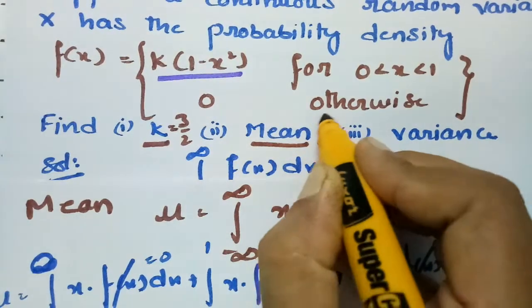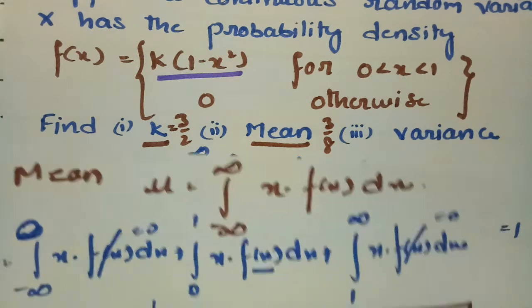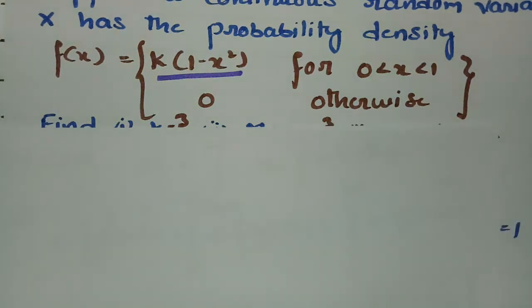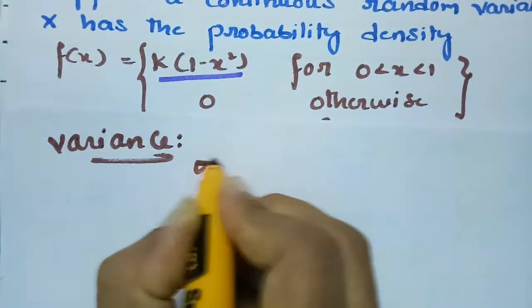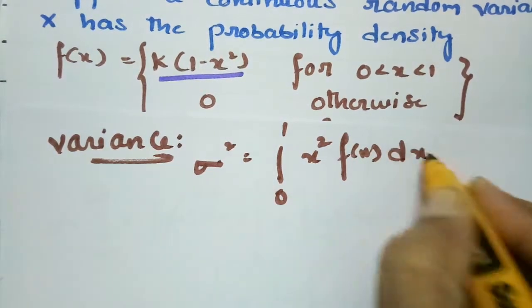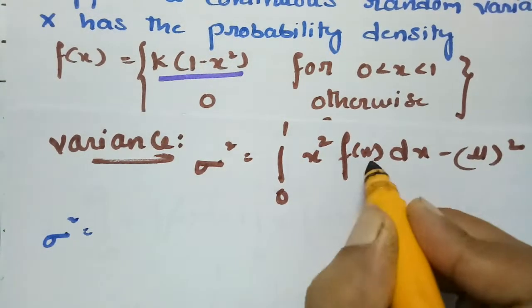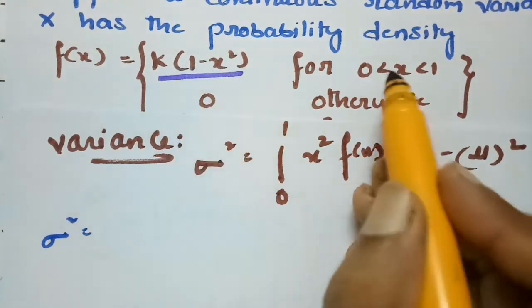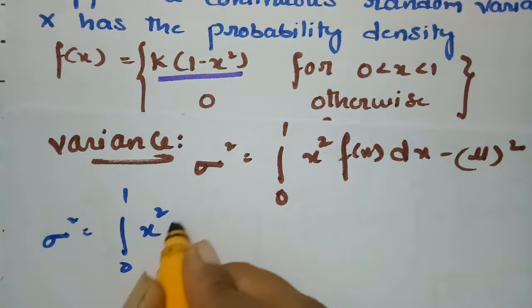With mean μ = 3/8 found, we now find the variance. The variance σ² equals the integral from 0 to 1 of x squared times f(x) dx minus μ squared. Since f(x) = k times (1 minus x squared) on (0,1), we have σ² equals the integral from 0 to 1 of x squared times k times (1 minus x squared) dx minus (3/8) squared.